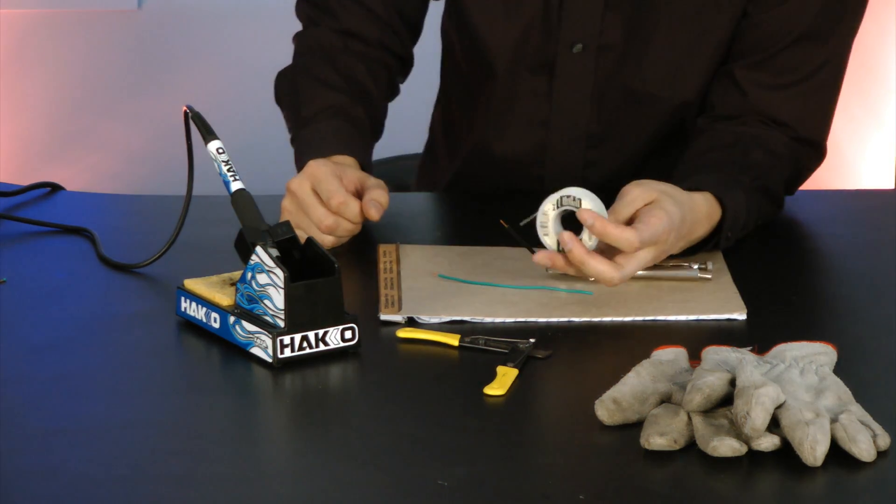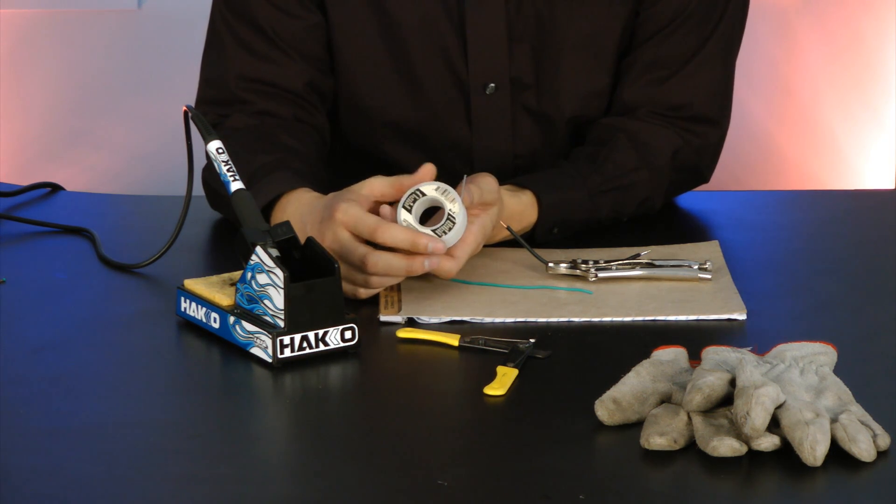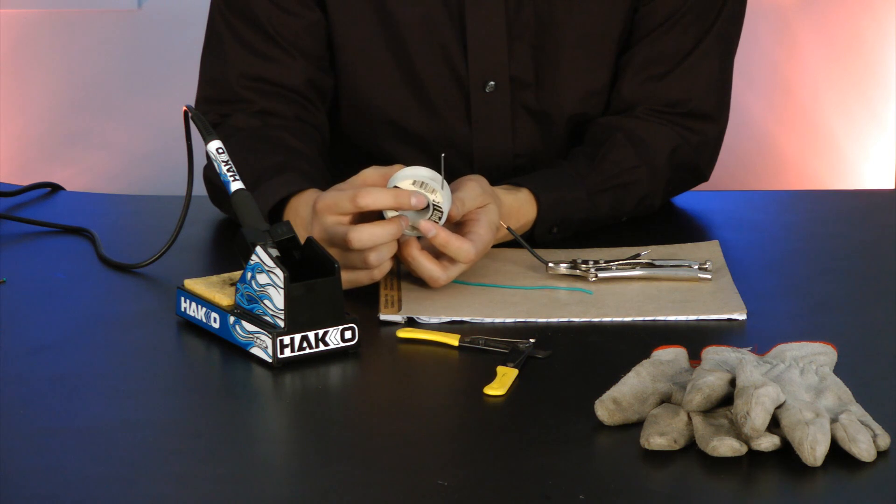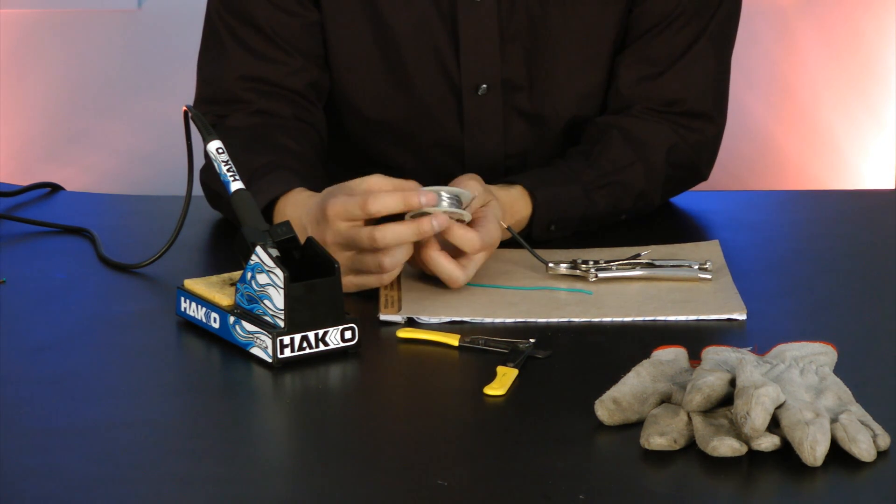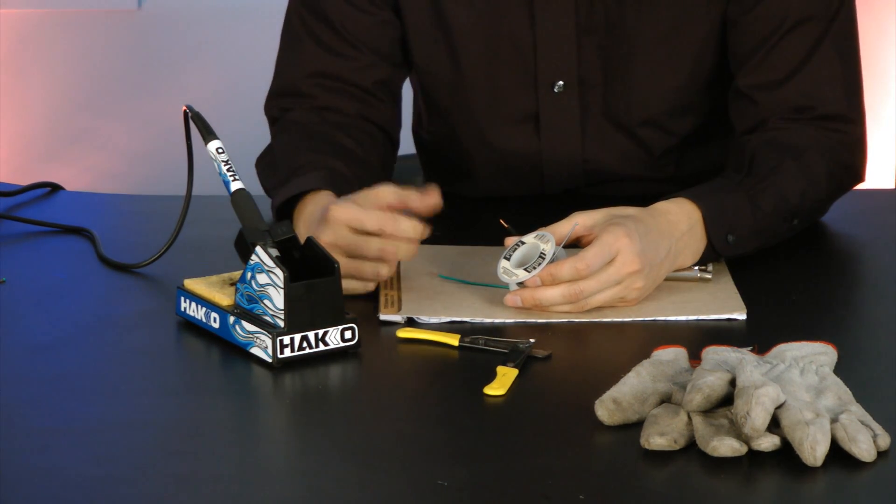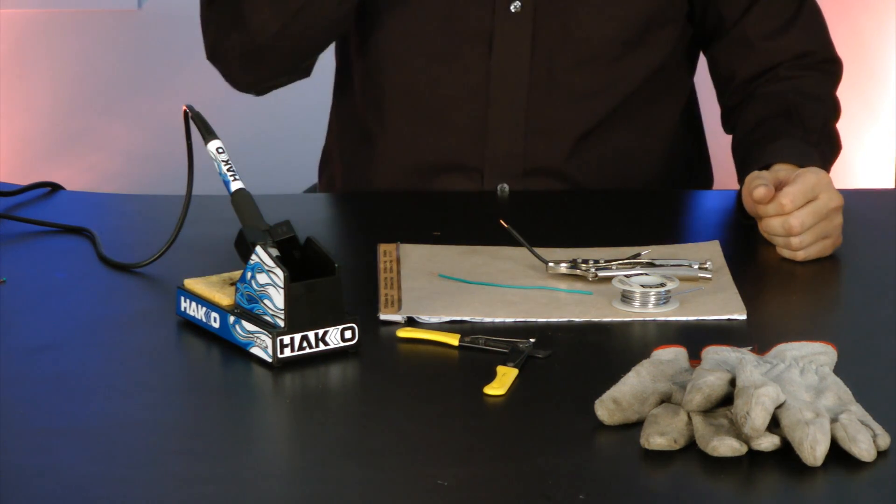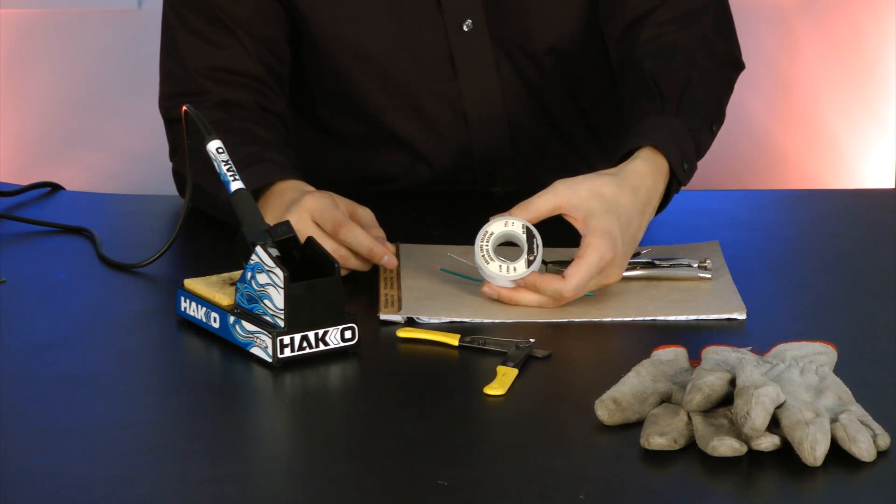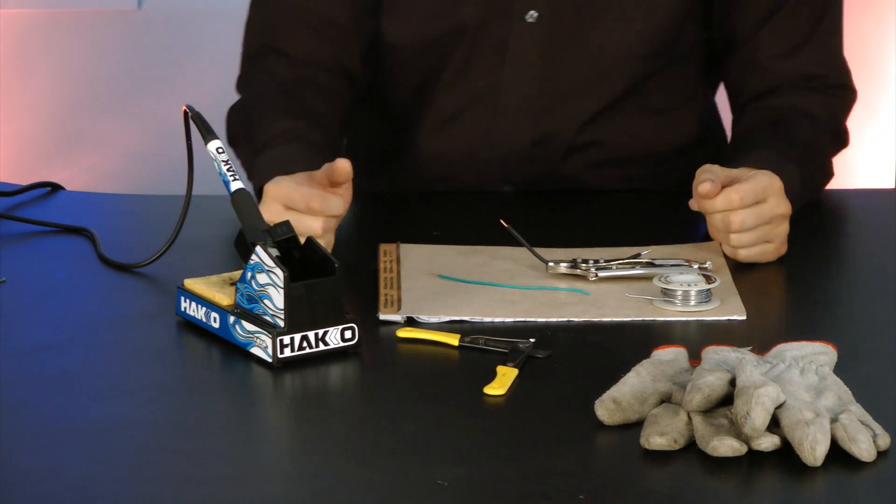Okay, so what you see here is a spool of solder. This is some 60-40 lead tin solder with a rosin core. There are other types out there on the market, so choose whatever you like. Because this solder does contain lead, just be sure to wash your hands afterwards.